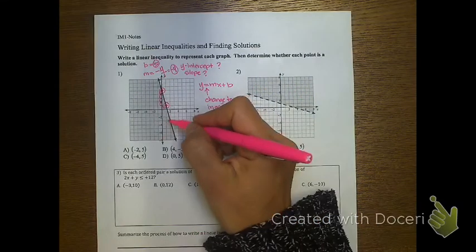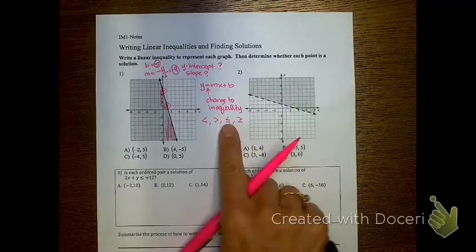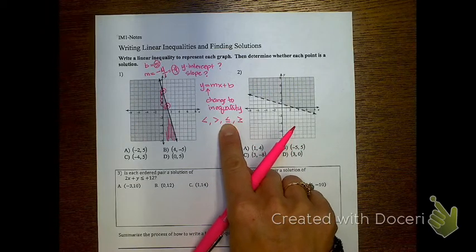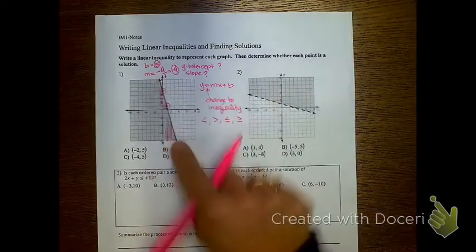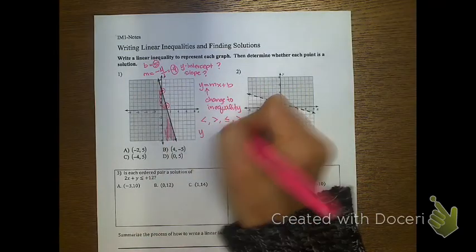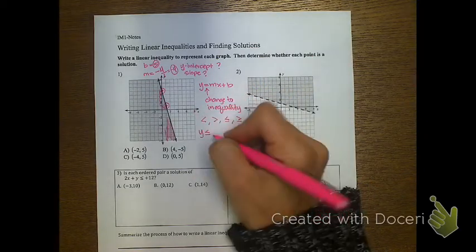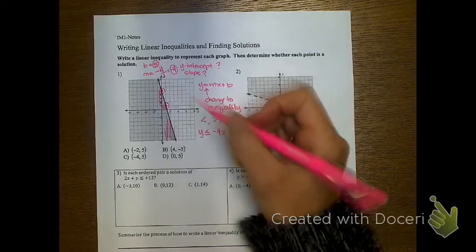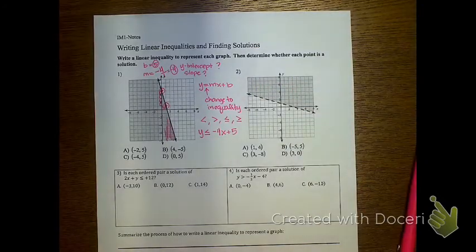When looking at the shading, if I put my pencil on the line and go down, that's where the shading is. Because the shading is under the line, I'm going to choose the less than or equal to symbol. So the inequality that represents this graph would be y is less than or equal to negative 4x plus 5. That would be my answer for the first problem.